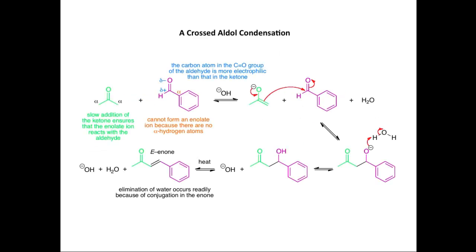We're now going to look at a crossed aldol condensation, which involves the reaction of two different carbonyl compounds. In order to achieve a good yield of a single crossed aldol condensation product, we need to select the right carbonyl reactants and use the appropriate conditions — there are three key things to bear in mind. We're going to look at an example where propanone reacts with benzaldehyde. The first thing to notice is that benzaldehyde cannot form an enolate ion — there are no alpha hydrogen atoms in benzaldehyde — so only propanone can be deprotonated to form an enolate ion.